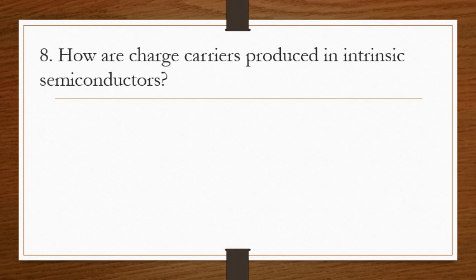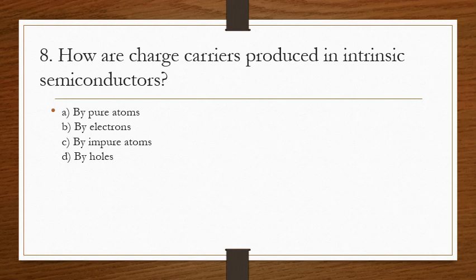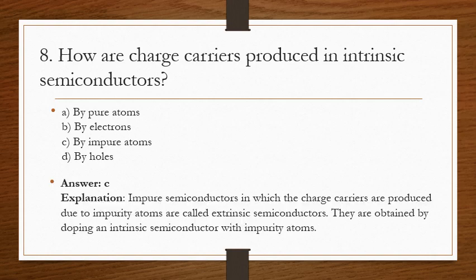The next question: how are charge carriers produced in intrinsic semiconductors? The answer is C. Impure semiconductors in which charge carriers are produced due to impurity atoms are called extrinsic semiconductors. They are obtained by doping an intrinsic semiconductor with impurity atoms.